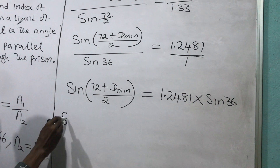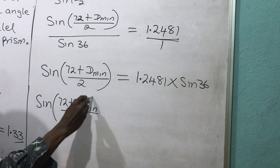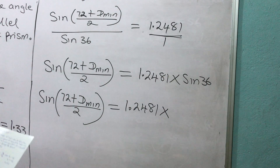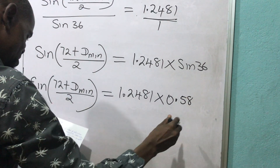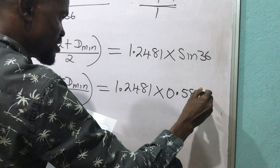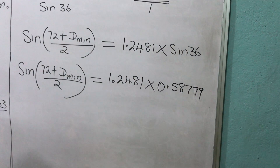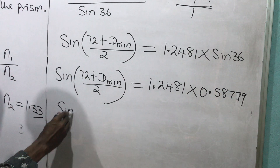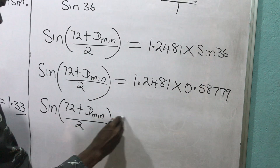So, sine of 72 plus minimum deviation all over 2, equals 1.2481 times sine of 36, which gives me 0.58779. Then I can now say that sine of 72 plus minimum deviation all over 2 is equal to approximately 0.7336.